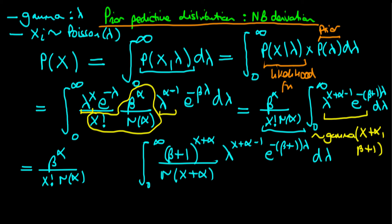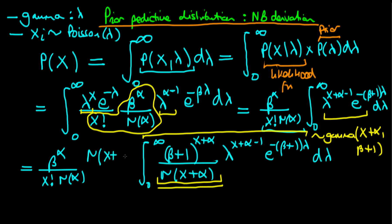So what we actually need to do is divide through by this term — which I'm underlining here — equivalent to multiplying through by 1 over this term. What we then get on the outside is gamma of x plus alpha divided through by beta plus 1 all to the power x plus alpha.